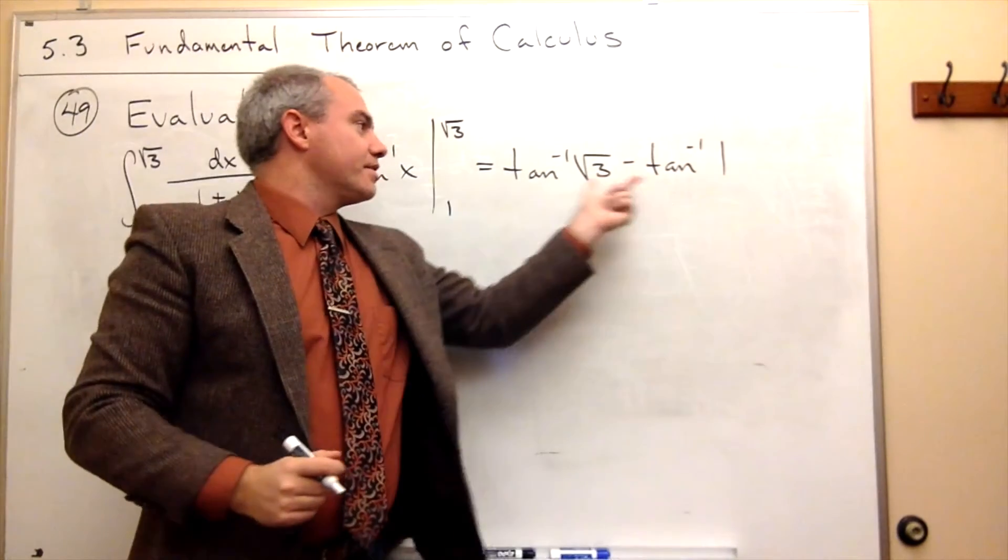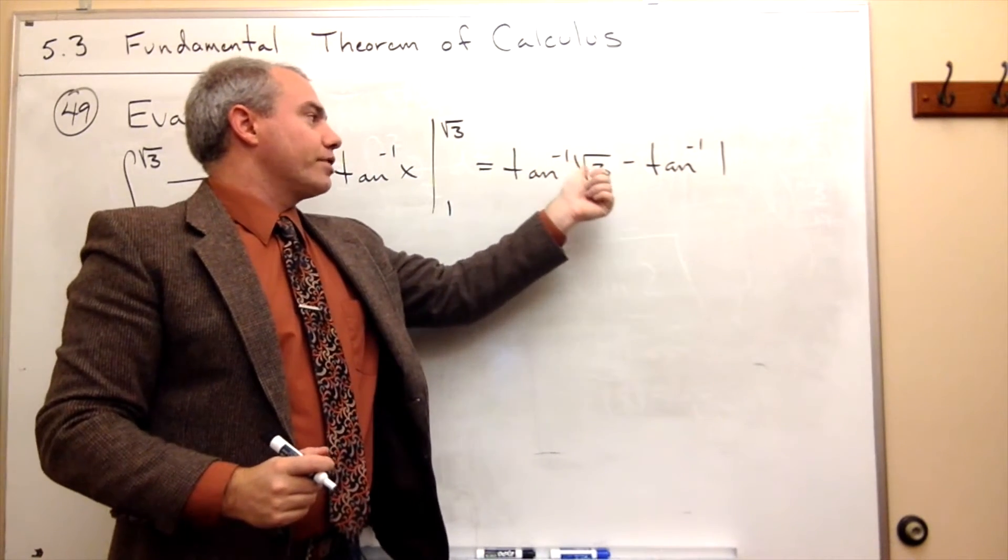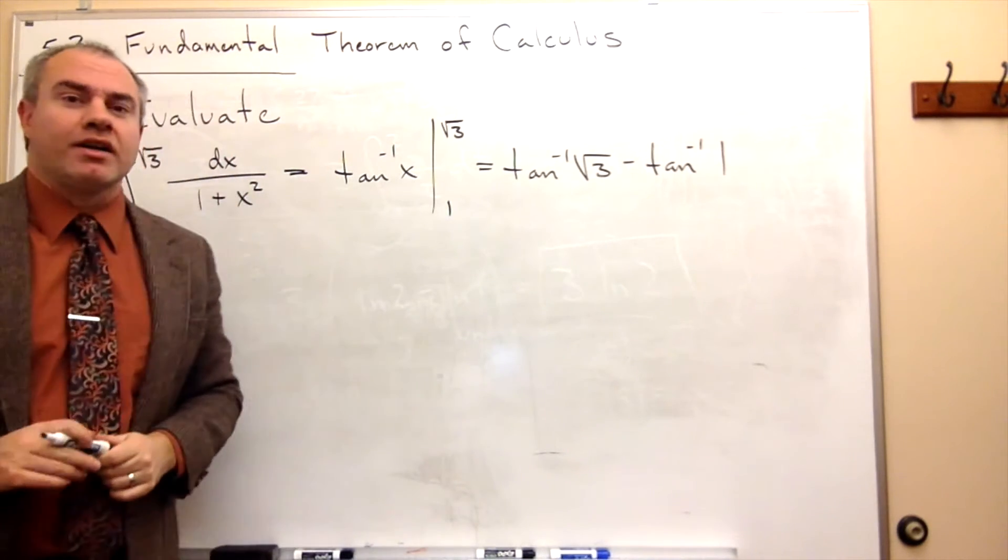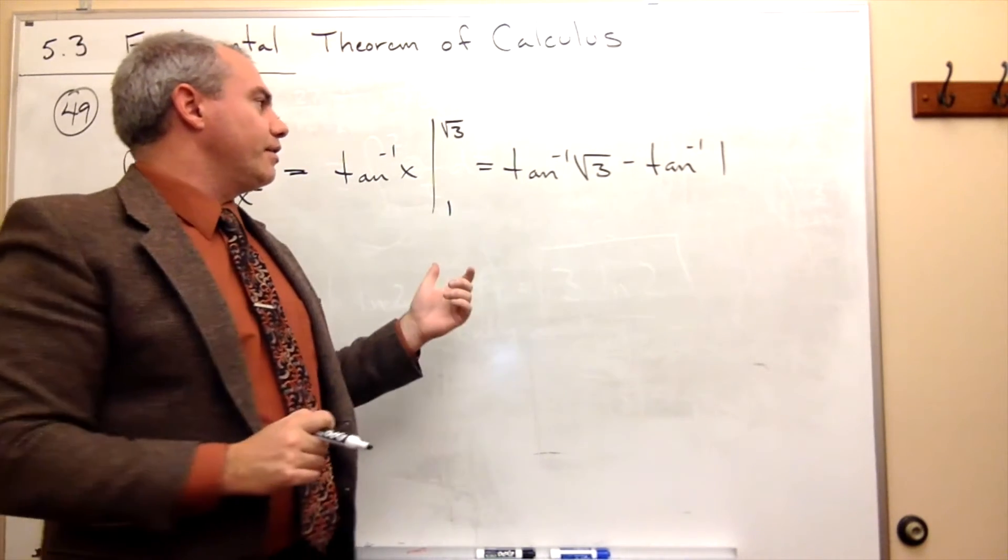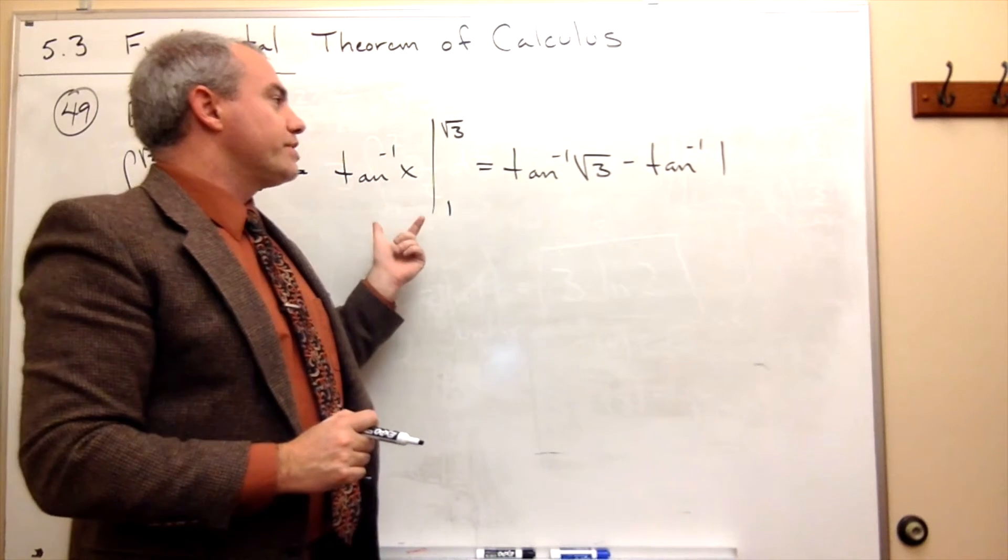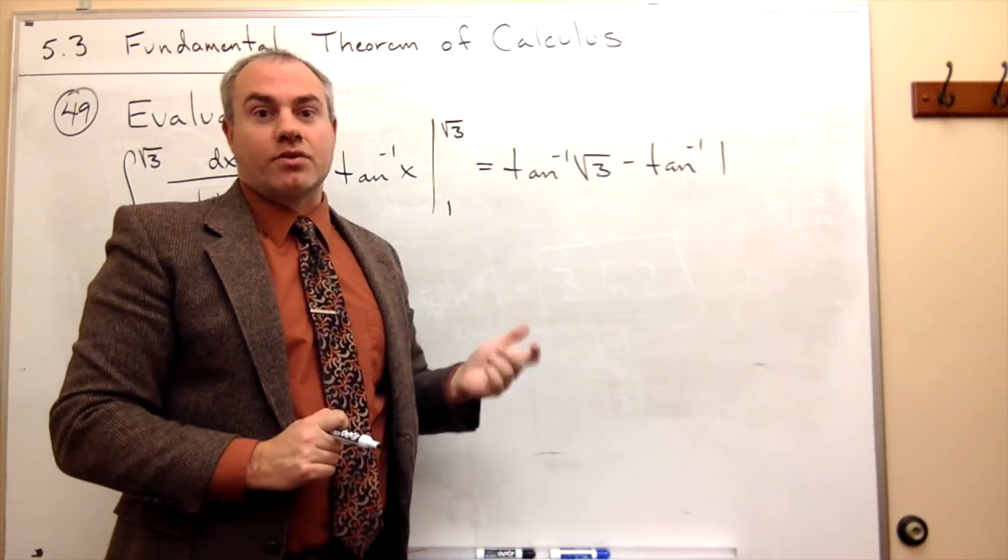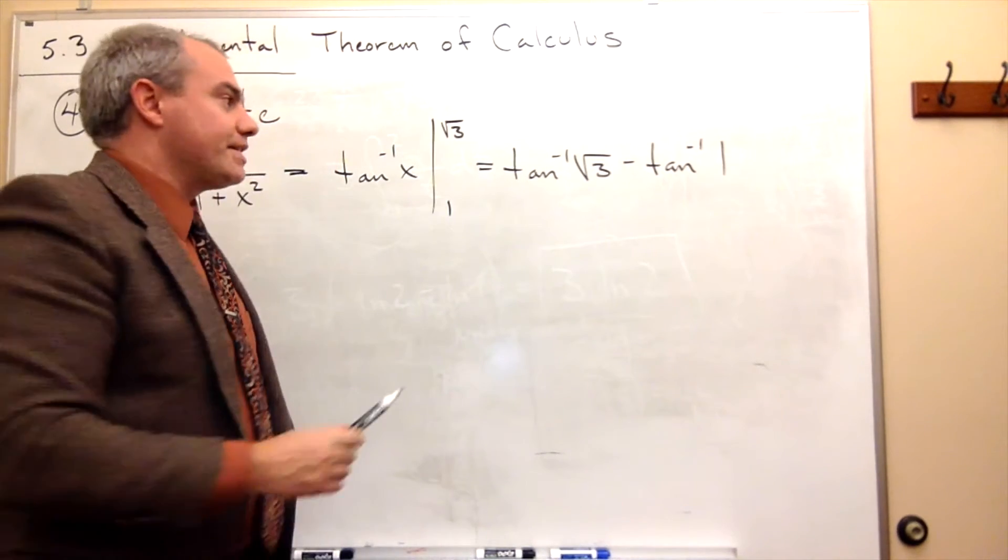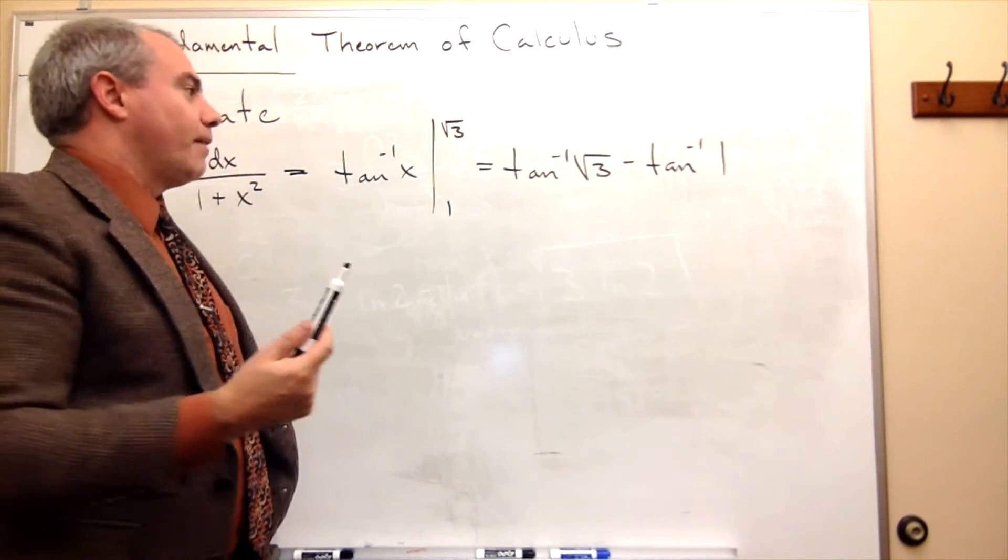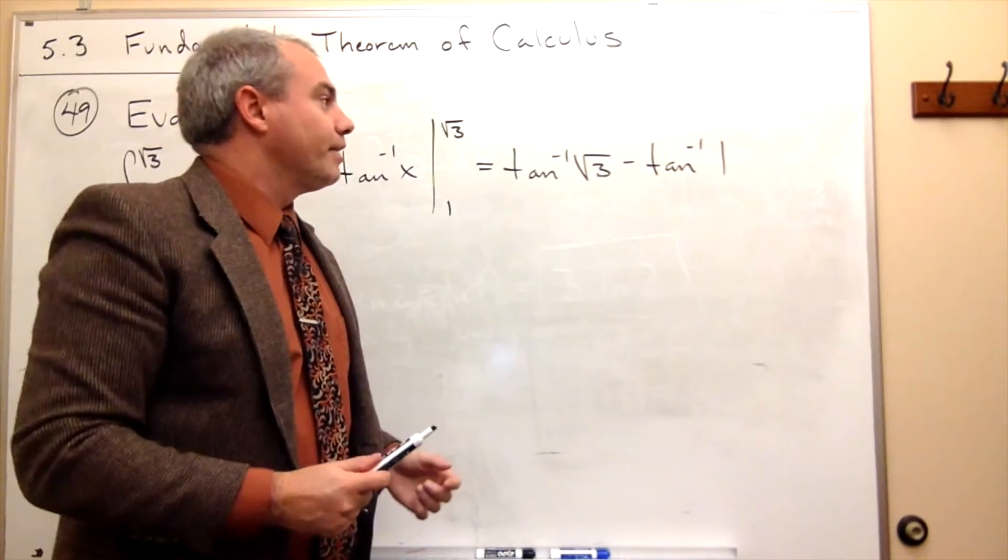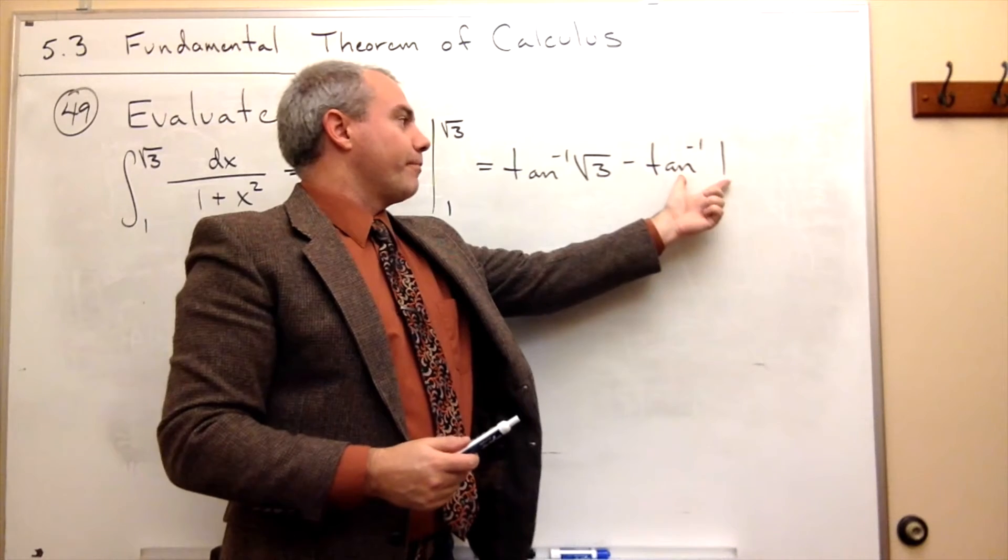Now, the way I think about these guys is if I have tangent inverse of square root of 3, then what I really want to know is, is there any angle whose tangent gives me the square root of 3? And if you're in doubt, you can play with it a little bit. You could consult a table and figure it out that way.